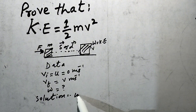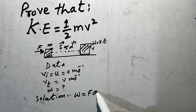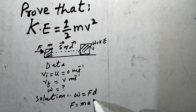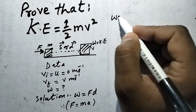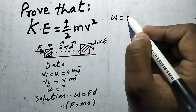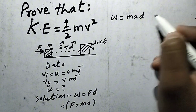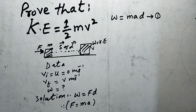Work done is calculated using the formula W equals F into D. Since F equals m into a, work done will be equal to m into a into D. This is equation number 1.